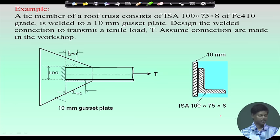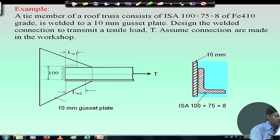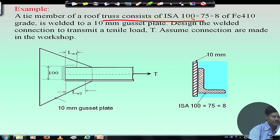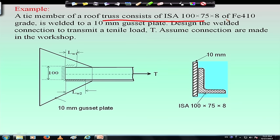The example we consider today: a tie member of a roof truss consists of ISA 100×75×8 angle section of Fe 410 grade, welded to a 10 mm thickness gusset plate. We need to design the weld connection to transmit a load T, assuming connections are made in the workshop. The gusset plate thickness is 10 mm and the angle thickness is 8 mm.